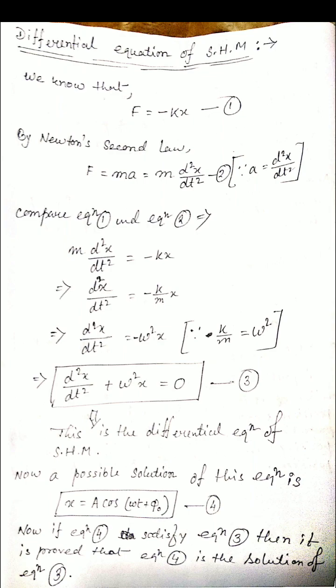Starting from F equals minus kx and Newton's second law F equals m times a, we replace a with its differential form d²x by dt². Comparing the two equations gives: d²x by dt² equals minus k by m times x. Since k by m is a constant, we denote it by ω², giving d²x by dt² plus ω²x equals 0. This is the differential equation of SHM, where ω is the angular frequency equal to 2π times ν.